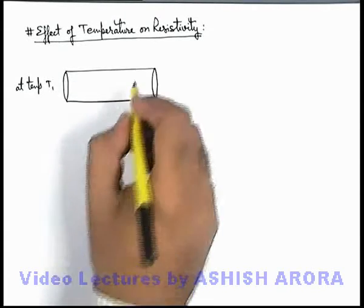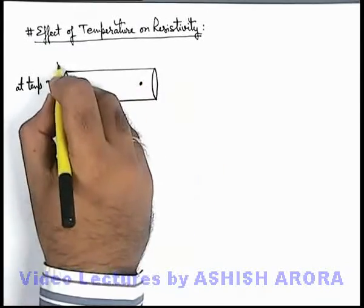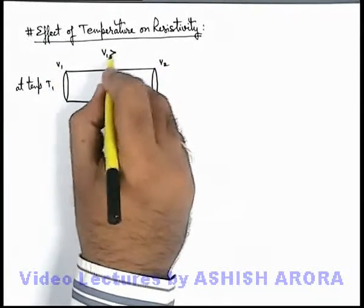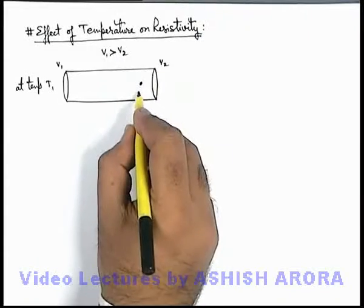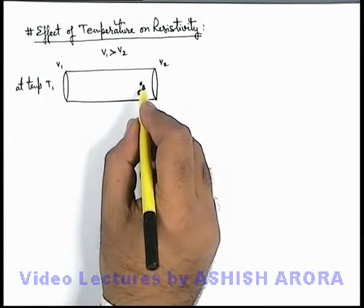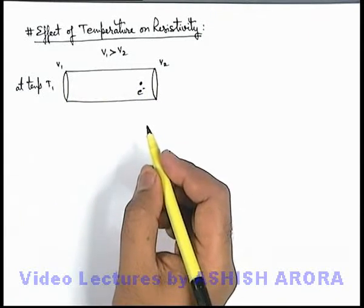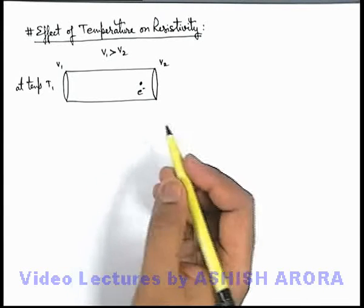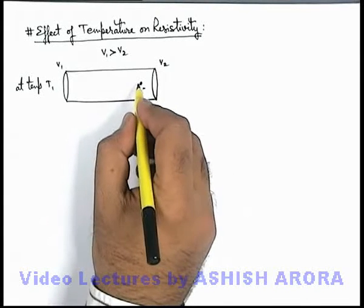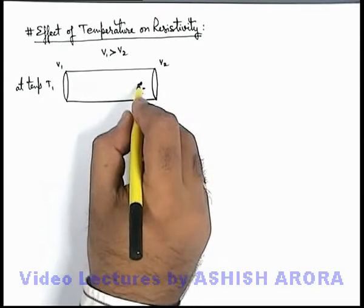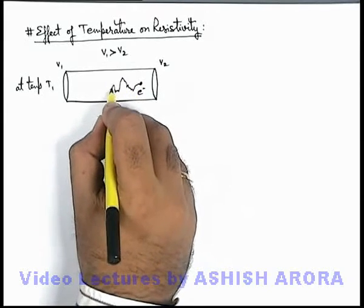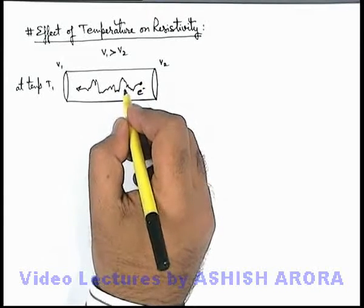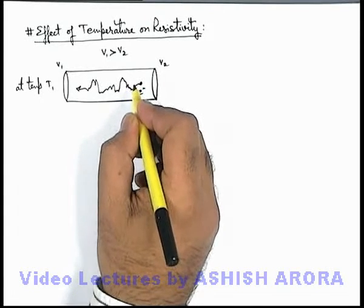If a potential difference is applied across it — say V1 and V2 — where V1 is greater than V2, then the free electrons at one end will start traveling toward the high potential, because electrons have a tendency to move toward high potential. This electron will not move straight; it will be moving in a randomized zig-zag manner because it is continuously colliding with neighboring electrons due to their thermal agitation.